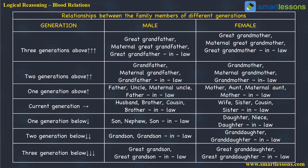Then we come to the current generation. Current generation male relationships could be the person's husband, a brother, a cousin, a brother-in-law, or your wife's brother. For female relationships in the current generation, it could be your wife, his sister, cousin, sister-in-law, or his wife's sister.